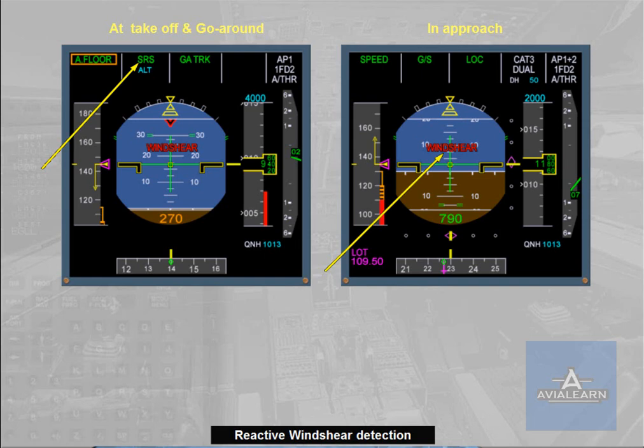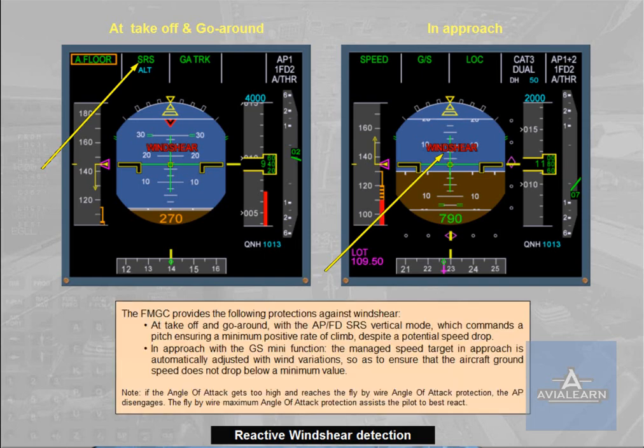Note: if the angle of attack gets too high and reaches the fly-by-wire angle of attack protection, the autopilot disengages. The fly-by-wire maximum angle of attack protection then assists the pilot to best react.